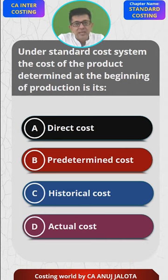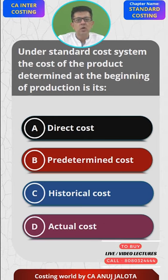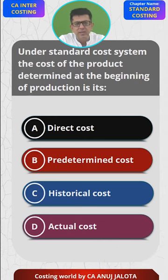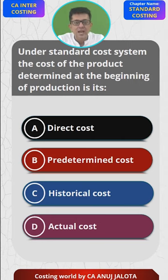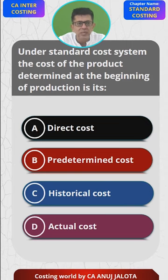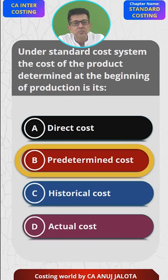Option (a), direct cost, only covers direct material, direct labor, and direct expenses — you don't estimate only those costs. Option (c), historical cost, refers to past period costs already incurred. Option (d), actual cost, is only known at the end of the period. So (a), (c), and (d) cannot be the answer — (b) is the correct answer. That's the correct one, thank you.